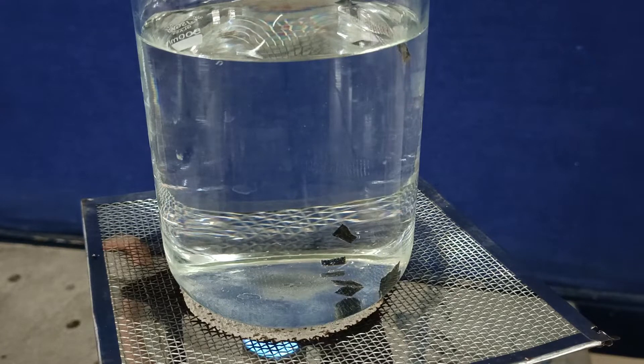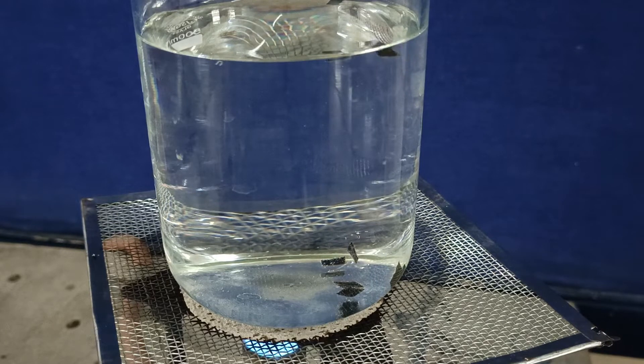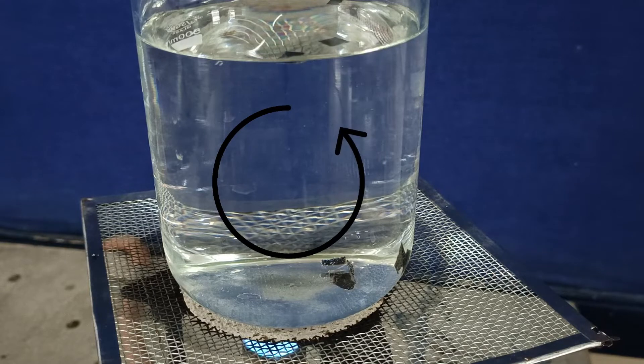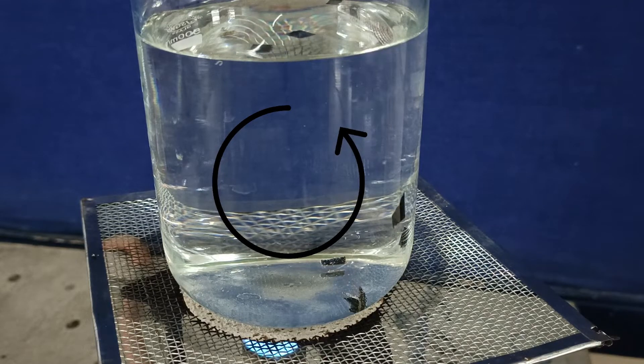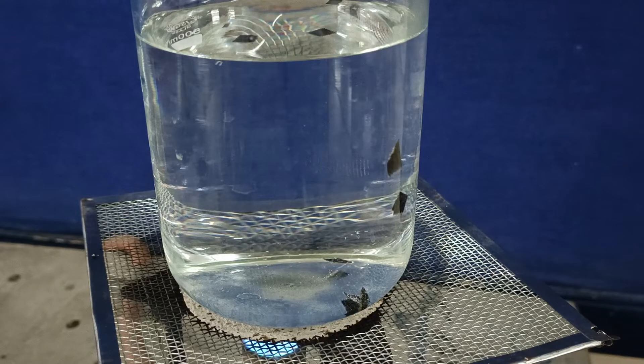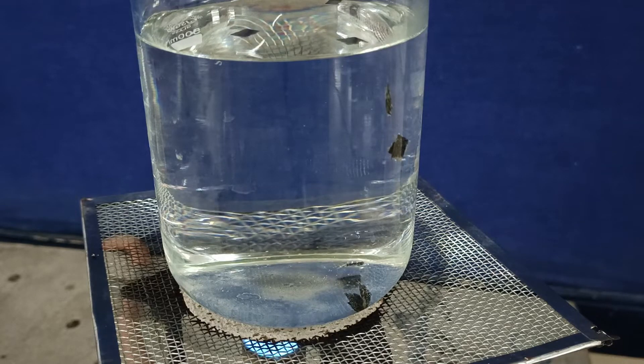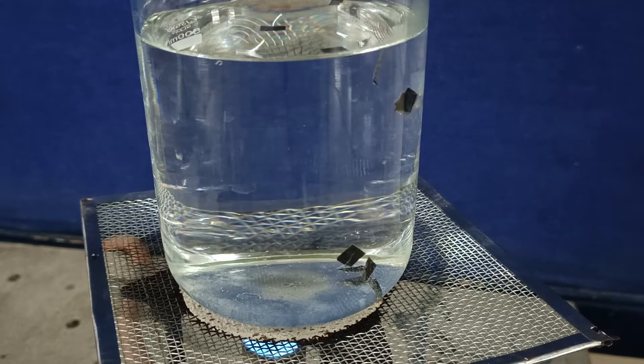When we heat the water from the bottom, the bottom part of the water becomes hot and expands, so the density decreases and the hot lighter water rises up. Along with the water, the pieces of paper also rise up.